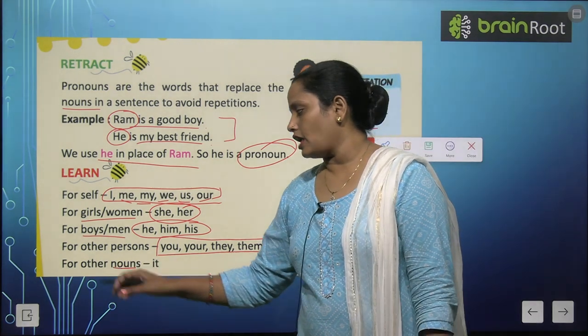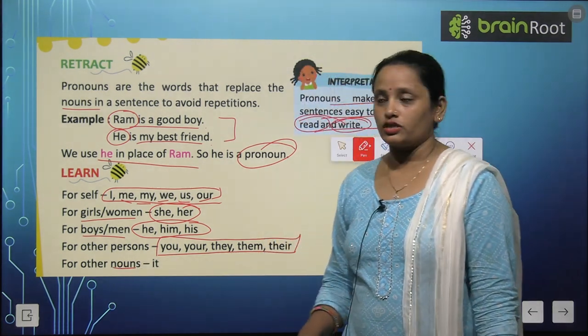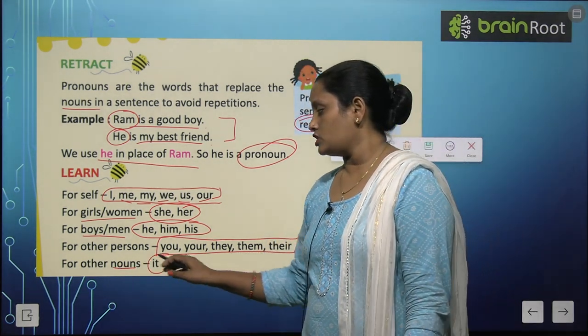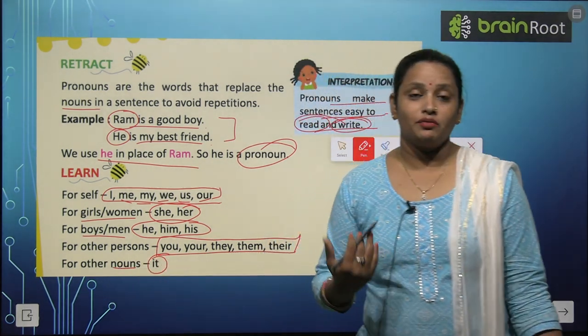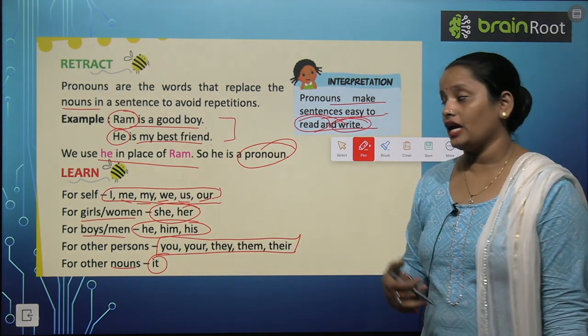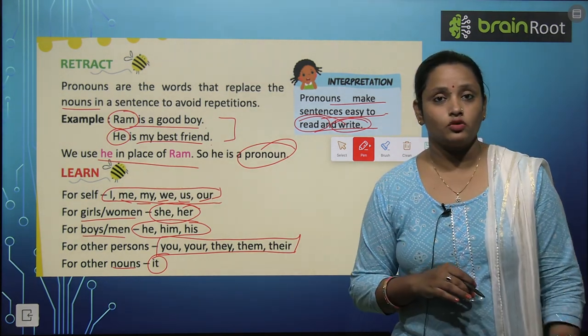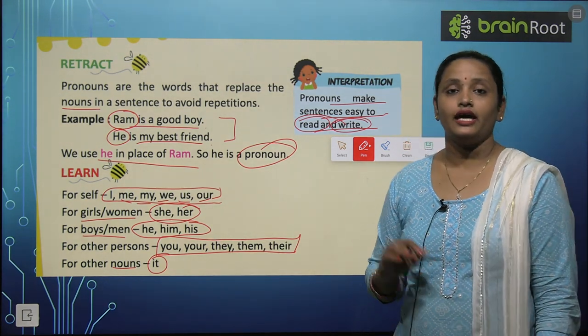And for other nouns — for other nouns, which could be an animal or a thing — for those we use 'it'.